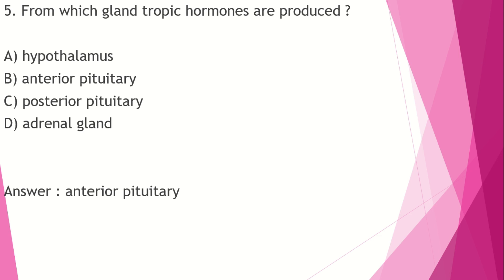The adrenal cortex produces cortisol, corticosterone, and aldosterone. The adrenal medulla produces emergency hormones: epinephrine and norepinephrine. The pancreas produces glucagon (alpha cells) and insulin (beta cells). The thyroid gland produces thyroxine and calcitonin. The parathyroid gland produces parathormone.